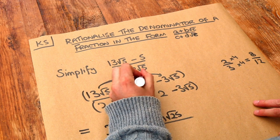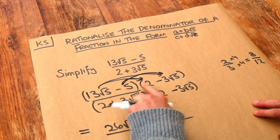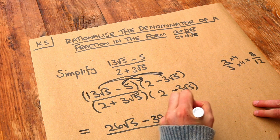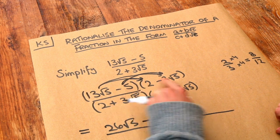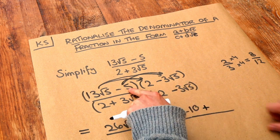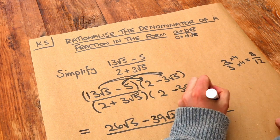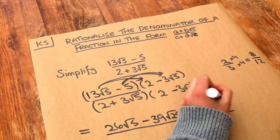Then we do the second thing times each thing in the second bracket. So we've got the minus 5 times 2, which is minus 10. And we've got the minus 5 times minus 3 root 5. Negative times negative is positive. The 5 times the 3 is 15, and then we've got that root 5 there.